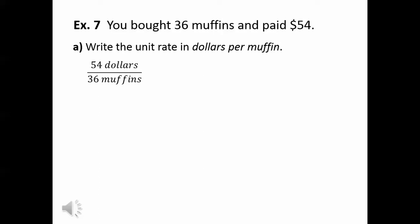To find the unit rate, we divide 54 divided by 36. That gives us 1.5. So we write our final answer in terms of money, $1.50 per muffin. So that means you're going to pay $1.50 for each muffin that you buy.